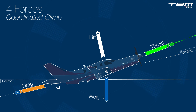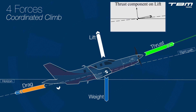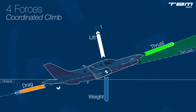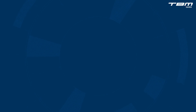Lift remains perpendicular to the flight path or relative wind. During climb, an angled attack is created between the thrust line and the flight path, which provides a vertical component increasing total lift. During a stabilized climb, climb performance is limited to the amount of excess thrust available at a given speed.